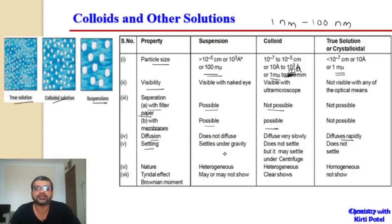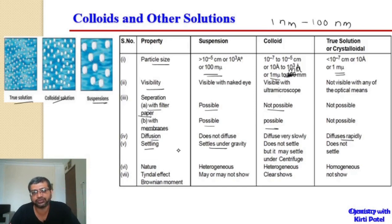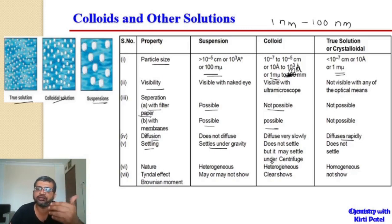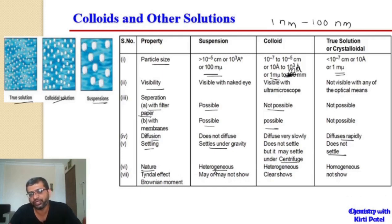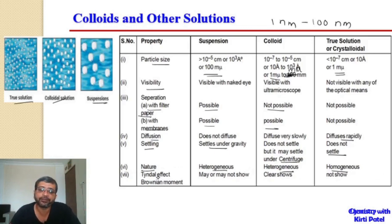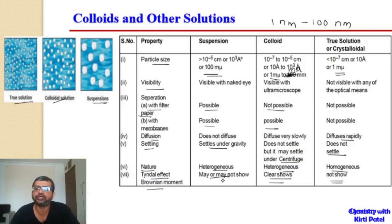Regarding settling: suspended particles have a large size and mass, so gravitational force easily pulls them down — they settle under gravity. Colloidal particles don't settle easily, but can be separated using a centrifuge machine through centrifugation. True solutions cannot be settled even by centrifugation. Concerning nature: suspended particles and colloidal solutions are both heterogeneous (having separate dispersed phase and dispersion medium), while true solutions are homogeneous.